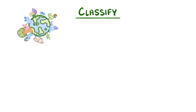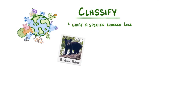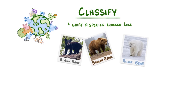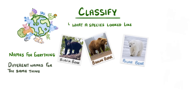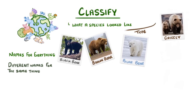With millions of different species on Earth, we need some way to classify them. Our ancestors often did it based on what a species looked like. For example, a black bear is different to a brown bear, which is different to a polar bear. But it's hard to come up with names like this for everything, and different people around the world had different names for the same thing — like the grizzly bear, which is just a type of brown bear.